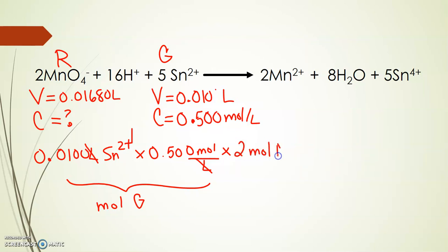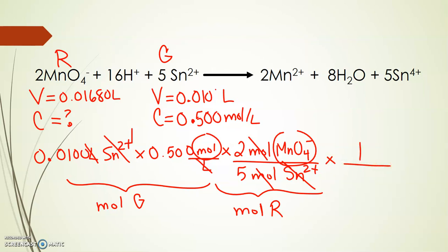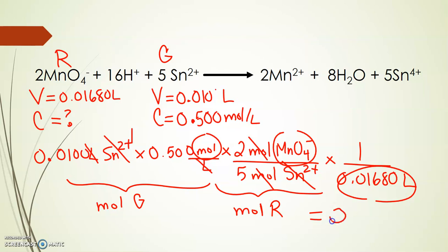Now to get moles of required, multiply by the mole ratio of required over given: that's 2 moles of MnO4- divided by 5 moles of Sn2+. The Sn2+ cancels, leaving us with moles of required. Now to answer the question — concentration of MnO4- is moles per liter — divide by the volume of MnO4-, which is 0.01680 liters. That gives us moles of MnO4- per liter. The math works out to 0.119 moles per liter with the right significant figures. That's how you do redox stoichiometry.